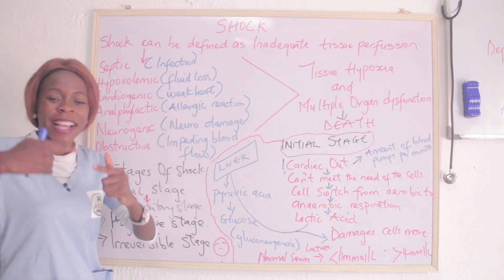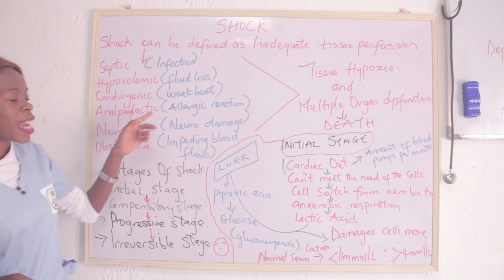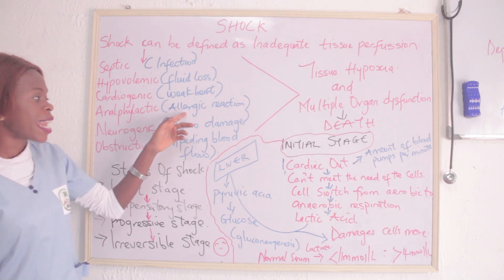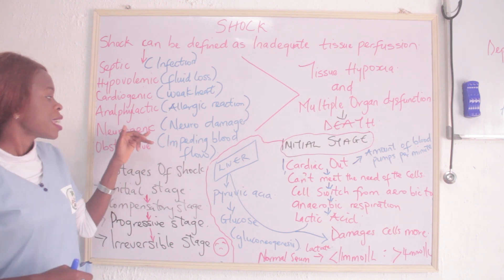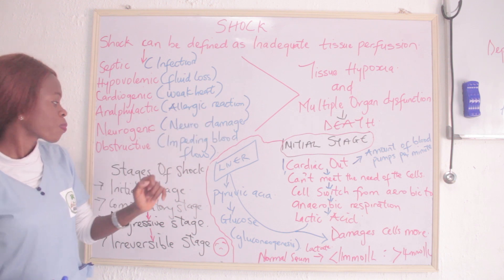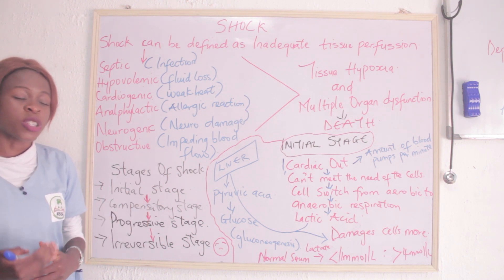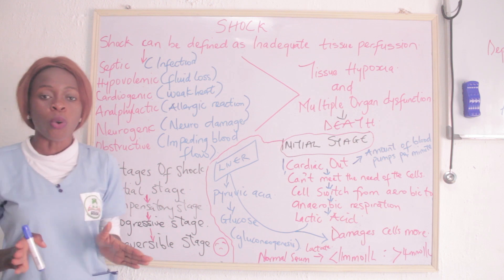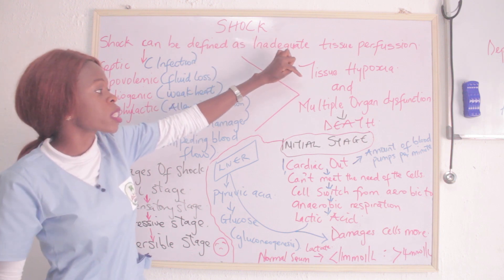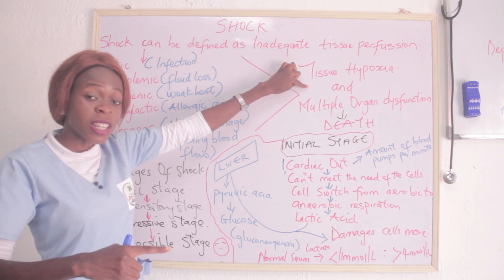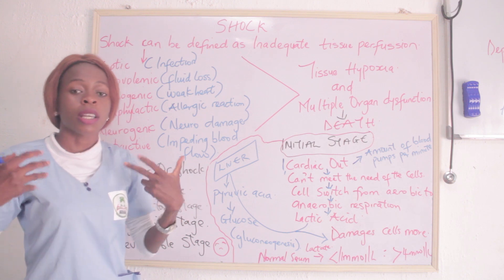All these types of shock will be explained in subsequent classes individually. We also have anaphylactic shock, which is as a result of allergic reaction. Then neurogenic shock — neuro, the brain — it's as a result of neuro damage. And the last one is obstructive shock, which is as a result of impeded blood flow. So no matter the cause of shock, it is definitely going to result in tissue hypoxia, and if care is not taken, multiple organ dysfunction syndrome and death.